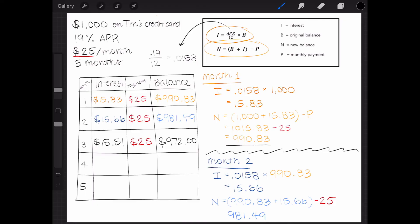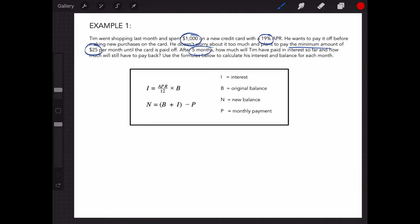If we repeat this process for months 4 and 5, we'll find that the amortization table will look like this. Let's refer back to what this problem is asking us for. We need how much interest he will have paid so far and how much Tim will still owe after 5 months.